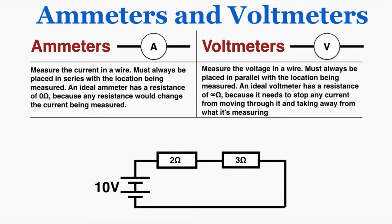Ammeters measure the current in a wire — literally they're like amp meters. They must always be placed in series with the location being measured. An ideal ammeter has a resistance of zero ohms, because any resistance would change the current being measured.